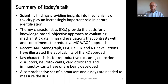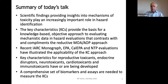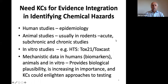A quick summary: scientific findings are providing insights into the mechanisms of toxicity, and these are playing an increasingly important role in hazard identification and evaluation. The key characteristics form a knowledge-based, objective approach for evaluating mechanistic data in hazard evaluation, which contrasts with and complements the reductive MOA and AOP approach. Recent IARC monograph, EPA, Cal EPA, and NTP evaluations have illustrated the applicability of this approach, and key characteristics of reproductive toxicants, endocrine disruptors, neurotoxicants, cardiotoxicants, and immunotoxicants have been or are being developed. What is really needed now is a comprehensive set of biomarkers and assays to measure these key characteristics.